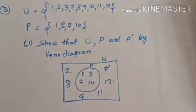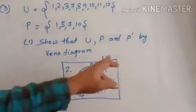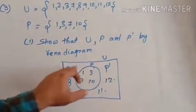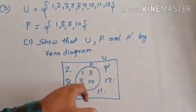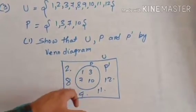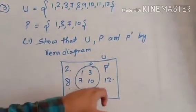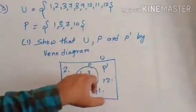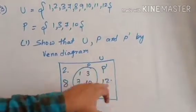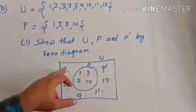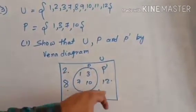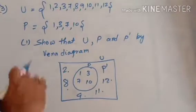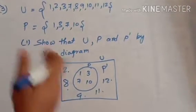Our presentation is completed. U is {1, 2, 3, 7, 8, 9, 10, 11, 12}. P is {1, 3, 7, 10}. And P complement is {2, 8, 9, 11, 12}. We represent all three in one diagram.